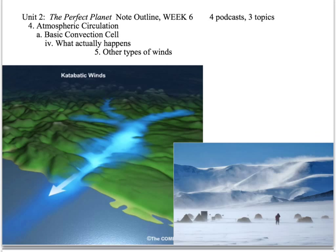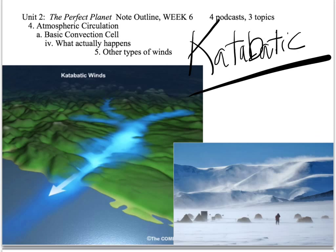Katabatic winds are the same thing but in the extreme. It's nighttime in an arctic area — very, very intensely cold air flowing down from the mountain areas, finding a path out to the sea. It's just going from higher elevation down to lower elevation. Really, really cold air blasting down as it cools, trying to find the lowest area. Not good stuff.